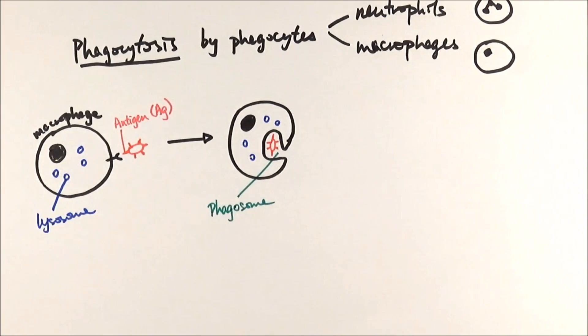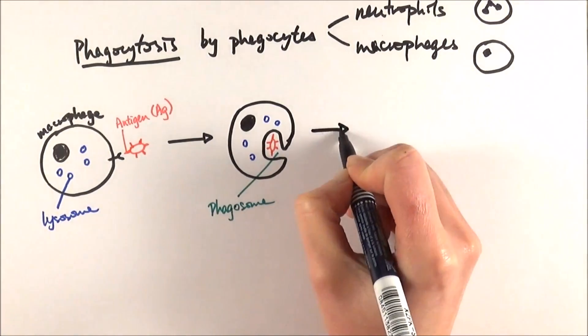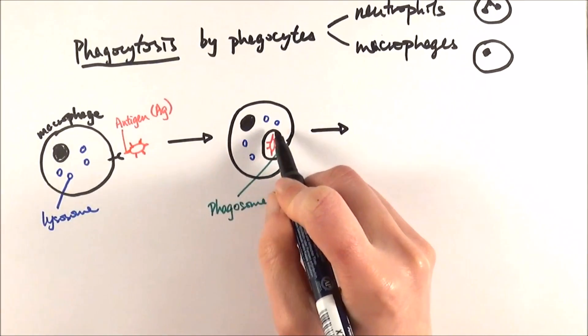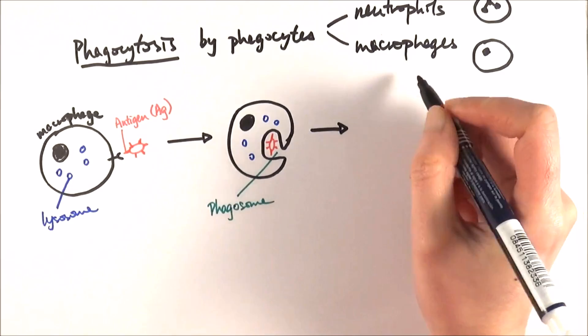And after that, as we mentioned earlier, there are lots of lysosomes around it. So therefore, the lysosome containing the enzyme will fuse with the phagosome, and releasing the lysosomes inside.